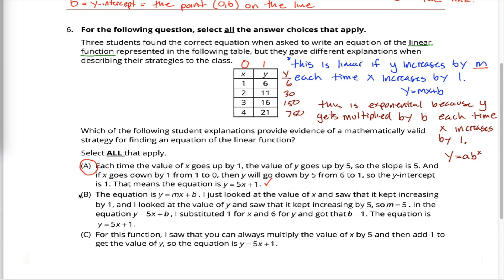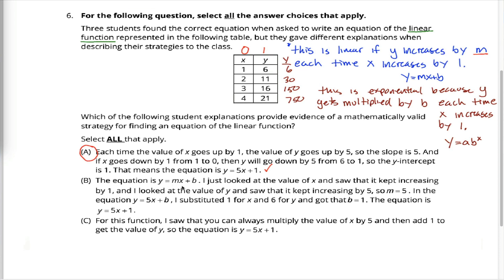What about student B? Student B starts with the equation y equals mx plus b. Great. Then looked at the value of x and saw that it kept increasing by 1, and looked at the value of y and saw that it kept increasing by 5. So m equals 5. Great. Essentially identical to what student A did to find the slope. However, to find b, they took a different approach. They took a more algebraic approach. They took this equation, y equals mx plus b, and said that if m equals 5, then we can think of the equation as y equals 5x plus b, where we still don't yet know the parameter b.